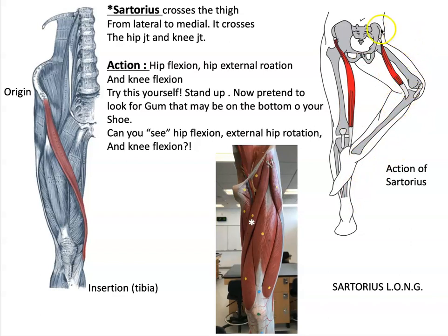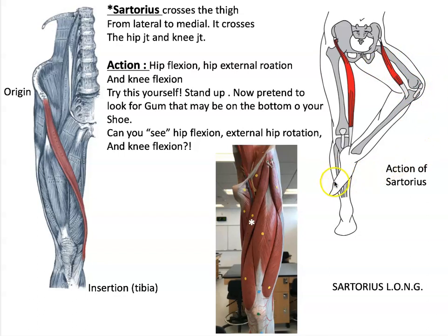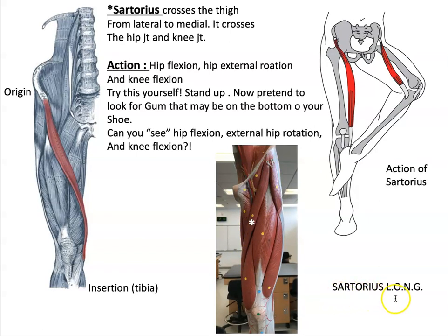This figure is trying to show you that motion: hip flexion, knee flexion, and external or lateral rotation of the hip while looking for gum at the bottom of your foot. Here's sartorius on your leg model — this long strap muscle. Sartorius is also the longest muscle in your body.